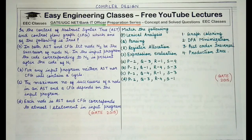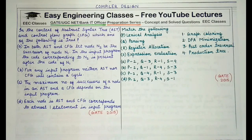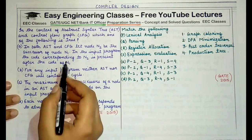The question is about abstract syntax trees (AST) and control flow graphs (CFG): which of the following statements is true? The first option states that in both AST and CFG, if node n2 is the successor of node n1 in the input program, the code corresponding to n2 is present after the code of n1. This statement is not correct.